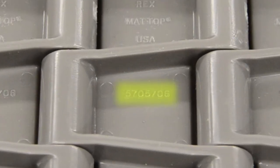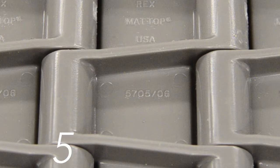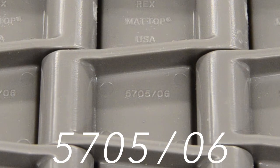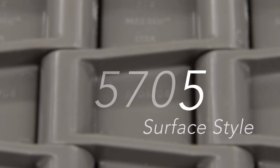Here we have the chain 5705, but the chain series number reads 5705 backslash 06. This is to simplify the manufacturing processes within the same series of chain. The first three digits of the chain number describe the chain series, while the last digit describes the surface style.